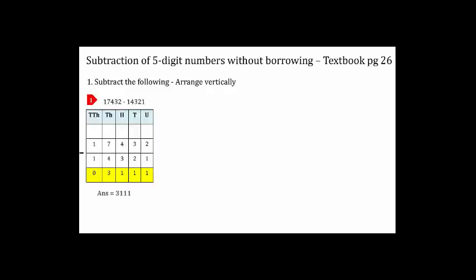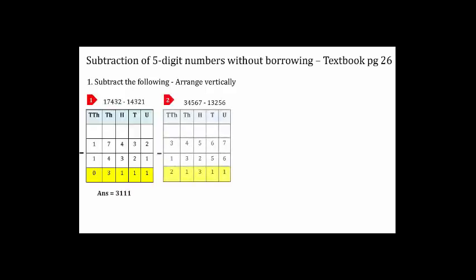Remember, students, we always begin by subtracting the units column followed by the other columns, and always check your answers. Now we will solve some more examples with five-digit numbers without borrowing. Remember to arrange them vertically. These sums are in your textbook, page number 26. You can practice these sums.